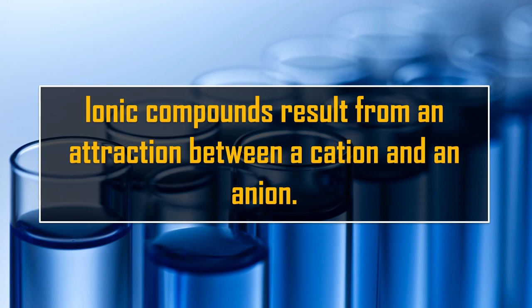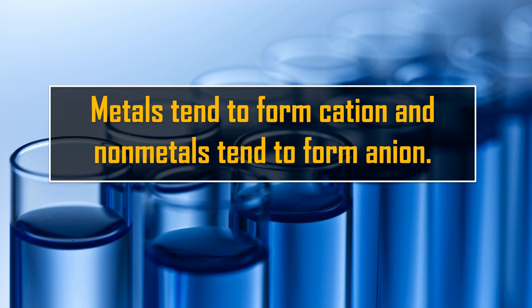Ionic compounds result from an attraction between a cation and an anion. A cation is a positively charged atom, while an anion is a negatively charged atom. So basically, ionic compounds are a combination of a positive and a negatively charged atom. Metals tend to form cations and non-metals tend to form anions. Using the periodic table, you can already identify if a given compound is ionic or not by checking if that compound is a combination of a metal and a non-metal element.